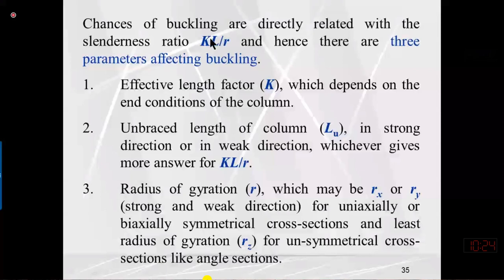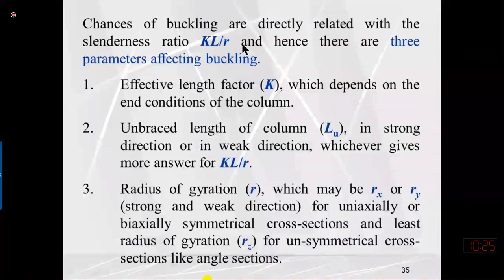Buckling will always occur about the axis for which the slenderness ratio is maximum. The slenderness ratio is a function of three parameters: K (effective length factor), L (unbraced length), and r (radius of gyration). To reduce slenderness ratio, we reduce K, reduce unbraced length, or increase the radius of gyration. Radius of gyration equals the square root of moment of inertia divided by area.